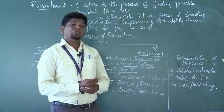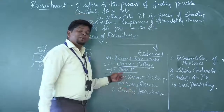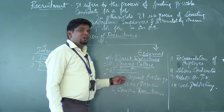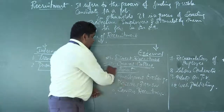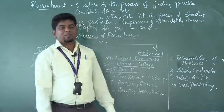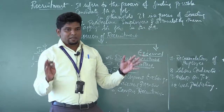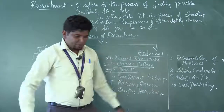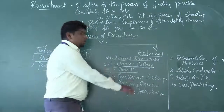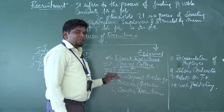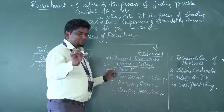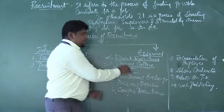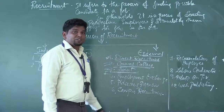The third external source is advertisement. If there are many posts to fill, companies advertise in newspapers, magazines, and journals. They mention the eligibility criteria, required experience, age limit, and other details. Through advertisements, you can attract good candidates for the job.